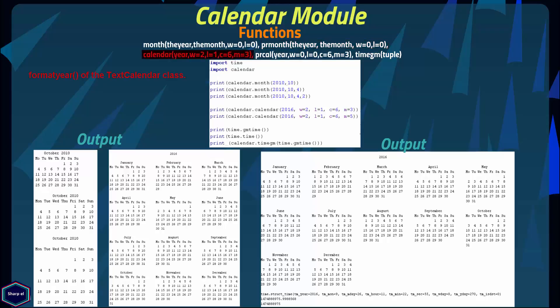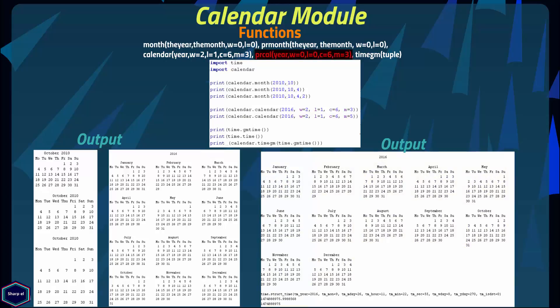Like the month() function, the calendar() function calls the format_year method of the TextCalendar class. It takes five arguments where year is compulsory, and it returns a three-column calendar for the given year. The argument w specifies the date column width, l the lines per week, c the number of spaces between month columns, and m the number of columns. The prcal() function is exactly like calendar() but it also prints the output to the terminal.